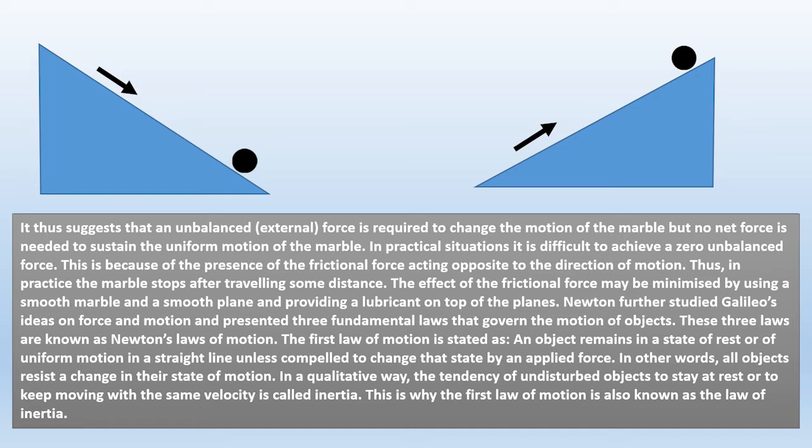In this case, the marble is subjected to no unbalanced elements. It follows that an unbalanced external force is necessary to alter the marble's motion, but no net force is required to maintain the marble's uniform motion. In real-life conditions, achieving a zero unbalanced force is impossible because of the existence of a frictional force moving in the opposite direction of travel. As a result, in fact, the marble comes to a halt after a certain distance. By using a smooth marble and a smooth plane, as well as a lubricant on top of the planes, the frictional force can be reduced.